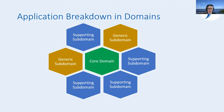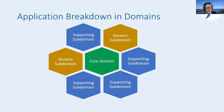So what does this look like — a core domain, some generic subdomains, supporting subdomains? A DDD application would have these different domains all working together. You may have more supporting domains than generic domains, and there will always be one core domain. You'll figure out through conversations which of your domains is the core. This month we're talking about DDD and C# — understanding where you find this in code. Next month we'll do domain storytelling, and in September we'll be talking about event storming.